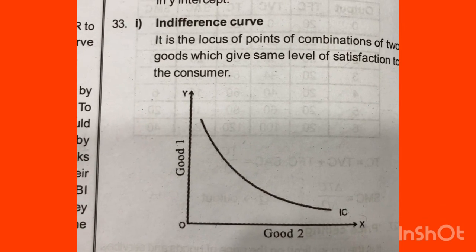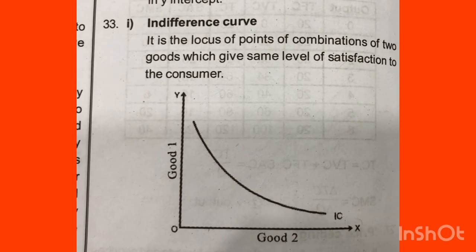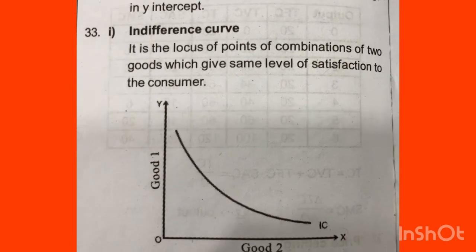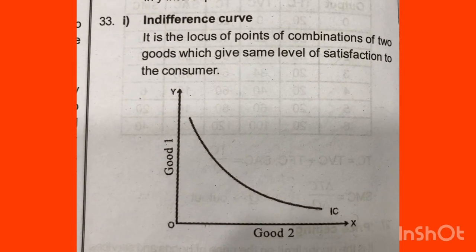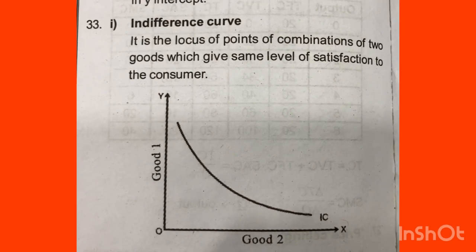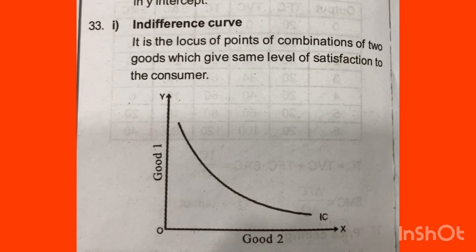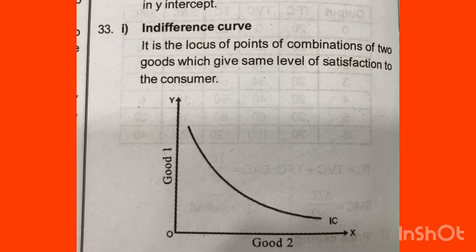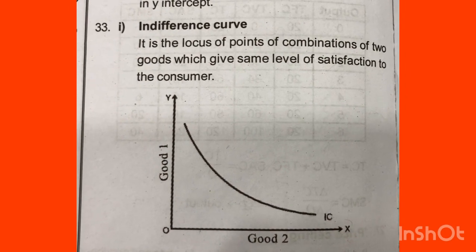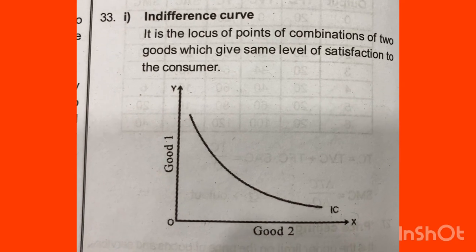This is good one and good two. With an IC curve, we call it Indifference Curve. The Indifference Curve is convex to the origin. If you take one point here and one point here, we have to take an equal level of satisfaction.